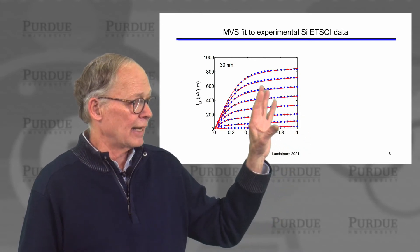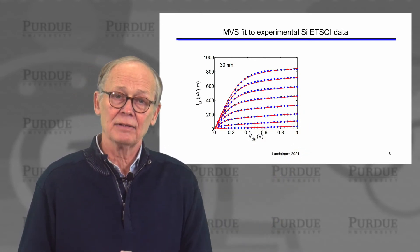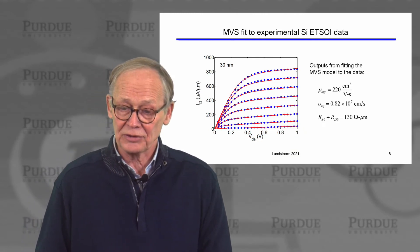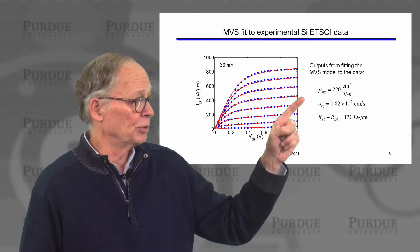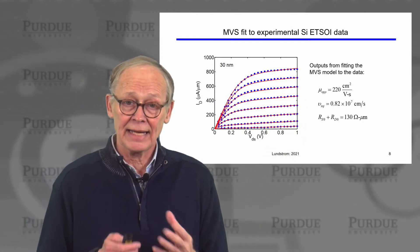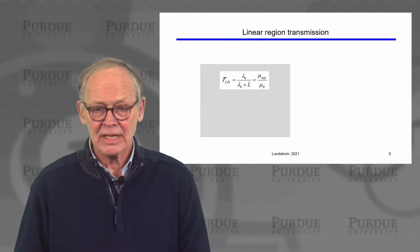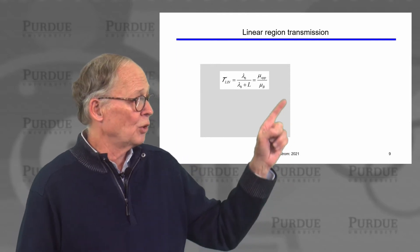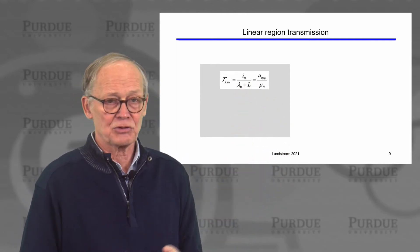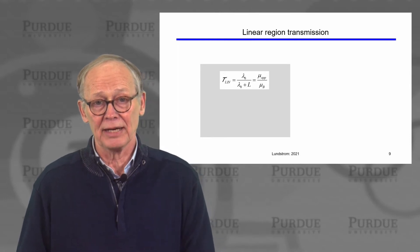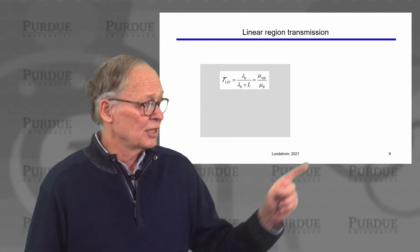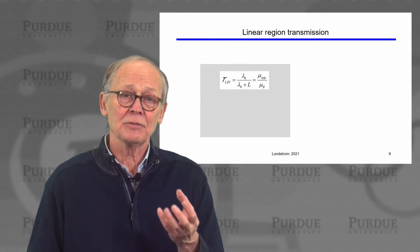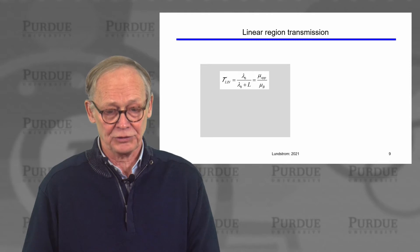Here is an MVS model fit to the measured data for the 30 nanometer channel length silicon MOSFET. From this fitting process, we extract an apparent mobility, an injection velocity, and the series resistance. In the linear regime, the transmission equals the mean free path divided by mean free path plus the channel length. You can also show that this equals the extracted apparent mobility divided by the ballistic mobility, which we can compute for this device.